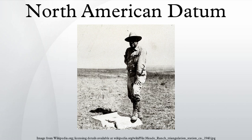Comparing NAD27 to NAD83: a point having a given latitude and longitude in NAD27 may be displaced on the order of many tens of meters from another point having the identical latitude and longitude in NAD83, so it is important to specify the datum along with the coordinates. The North American Datum of 1927 is defined by the latitude and longitude of an initial point, the direction of a line between this point and a specified second point, and two dimensions that define the spheroid. The North American Datum of 1983 is based on a newer defined spheroid.